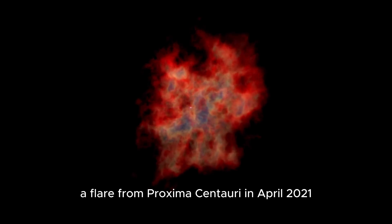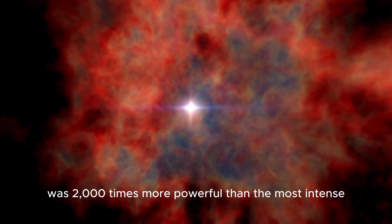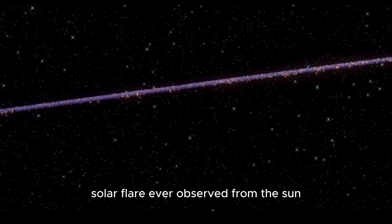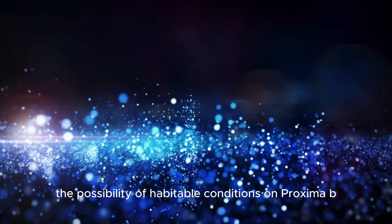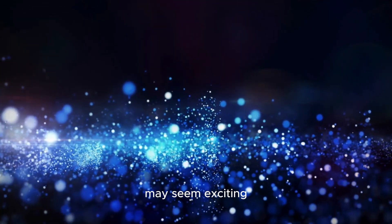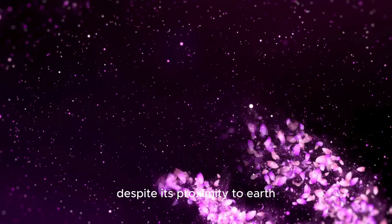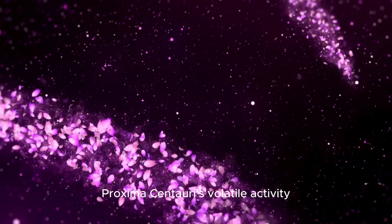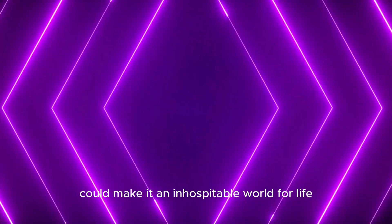In fact, a flare from Proxima Centauri in April 2021 was 2,000 times more powerful than the most intense solar flare ever observed from the sun. The possibility of habitable conditions on Proxima b may seem exciting, but the reality is much less promising. Despite its proximity to Earth, Proxima Centauri's volatile activity could make it an inhospitable world for life as we know it.